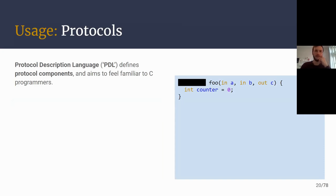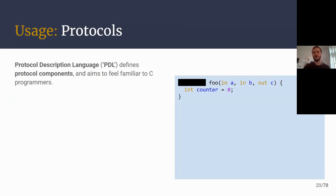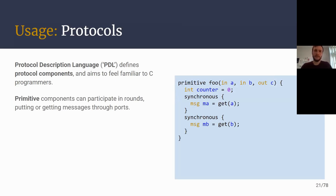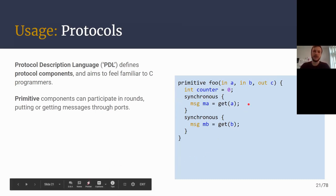Protocol Description Language, which I'll call PDL for short, allows you to express this kind of behavior in a language purpose-built for this. It's meant to feel as close to C as possible, so you still have things like procedural control flow, types, and variables. One kind of component you can define is the primitive component, used to do communication work. Like the native component, you organize groups of message exchange operations into synchronous groups. Here we have some components participating in two rounds — in the first, receiving a message through port A and discarding it, and then through port B in another round.